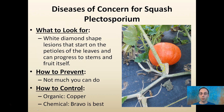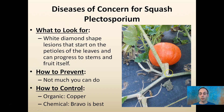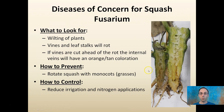Plectosporium produces white diamond-shaped lesions on the petioles of the leaf. It can progress to the stems and also the fruit itself. Usually there's not much you can do organically, but spraying copper products can help. For chemical control, a Bravo chlorothalonil product would be the best option. This is nicely growing on fabric here, which prevents weeds and allows for a clean harvest of the fruit.